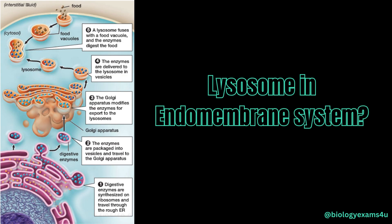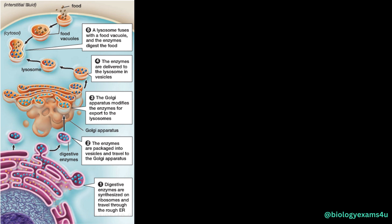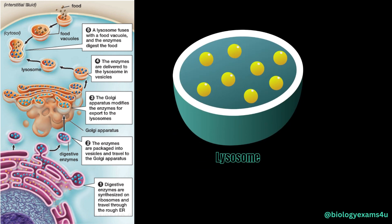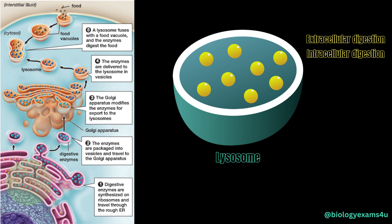Now let us see how the lysosome is involved in the endomembrane system. Lysosomes are single membrane-bound sacs of digestive enzymes with a relatively acidic pH that break down old and damaged cell parts — a process called autophagy — and are also involved in extracellular digestion. The genes encoding the digestive proteins are transcribed into mRNA, ribosomes synthesize the digestive proteins, which move to the RER for protein folding and processing, then packaged in vesicles and fused with the Golgi, further processed, packaged, and fused with the lysosome.